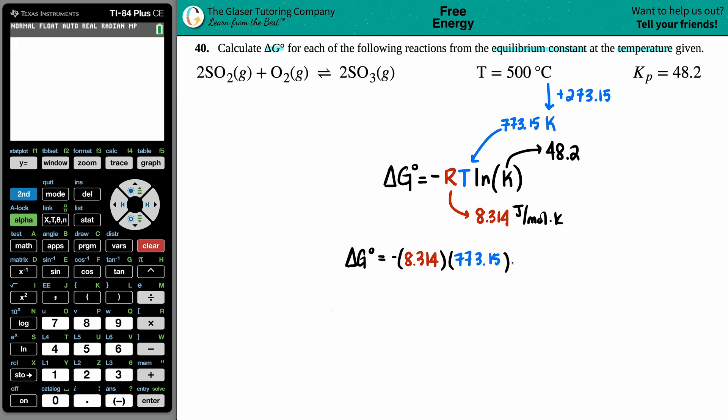And then ln of the K value, 48.2. Good thing with TI-84s is that you can plug this all into the calculator in one shot and it will do the functions properly. So let's do it: negative 8.314 times 773.15 times - gotta find the natural log button, the ln, that's over here on the left-hand side - and then 48.2. You can close the parentheses, you don't have to, and then just press enter.